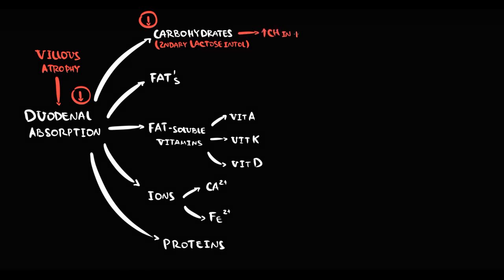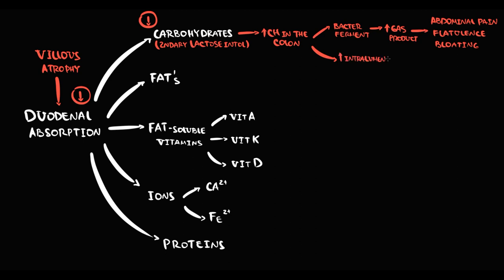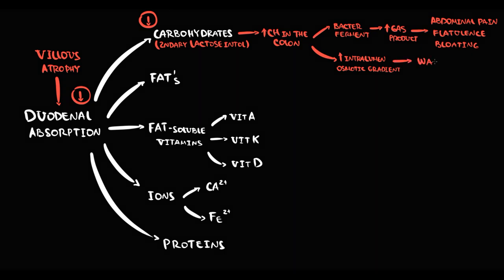The increasing amount of unabsorbed carbohydrates in the large intestine causes increased bacterial fermentation, producing gases such as methane and hydrogen. Increased gas production causes clinical symptoms including abdominal pain, flatulence, and bloating. Additionally, the high concentration of carbohydrates in the colon creates a high osmotic pressure gradient, decreasing water absorption and thereby causing watery diarrhea.